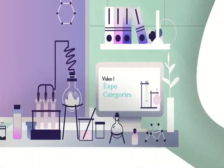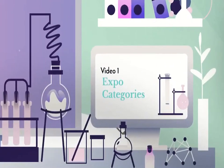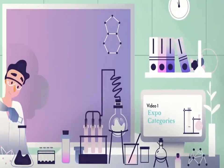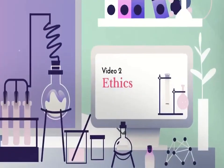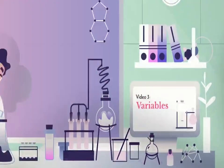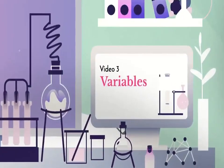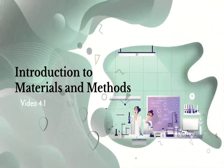In video one we helped you identify the most appropriate category for your project. In video two we helped you identify and resolve potential ethics violations. In video three we helped you to identify variables in scientific investigation type experiments. In this video we will introduce you to the different materials and methods that you could use.